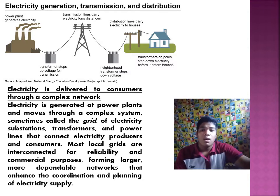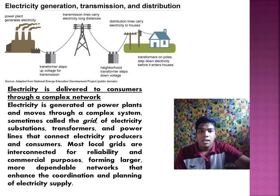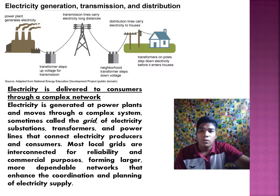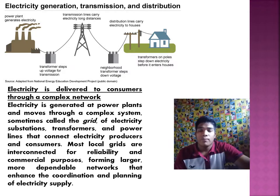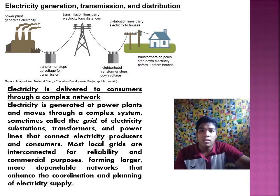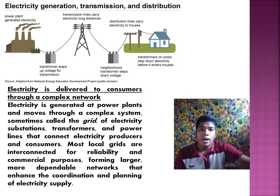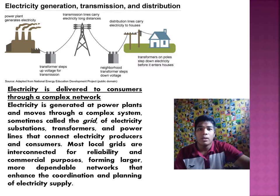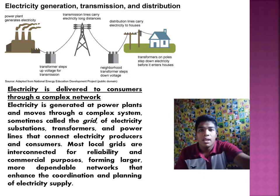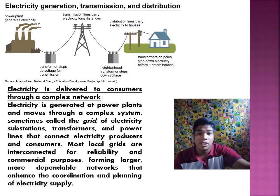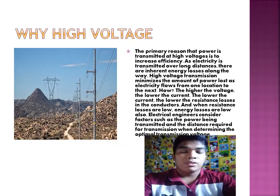Looking at the diagram, it shows that the power plant generates electricity, and through a transformer, steps up the voltage for transmission. Transmission lines carry electricity long distances to a neighborhood transformer, which steps down the voltage. Distribution lines then carry electricity to houses, and transformers on poles step down the electricity before it enters houses. That is the flow of electricity through generation, transmission, and distribution.